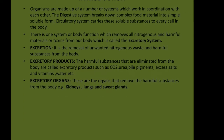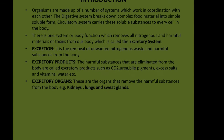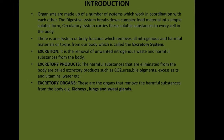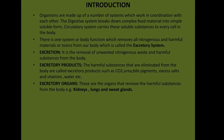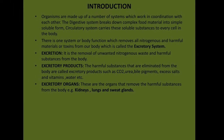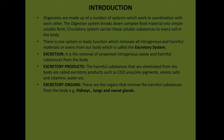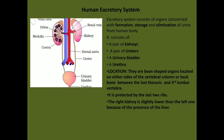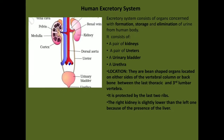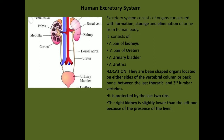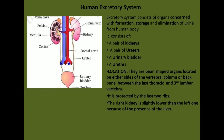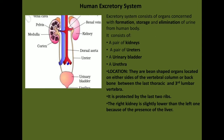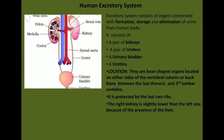Excretory organs are the organs that remove harmful substances from the body, for example kidneys, lungs, and the sweat glands. The excretory system consists of organs concerned with formation, storage, and elimination of urine from the human body.